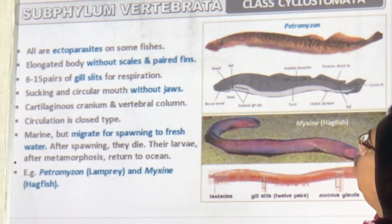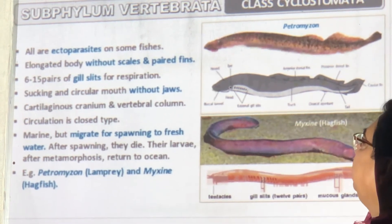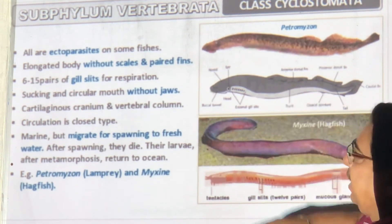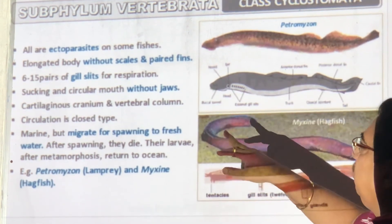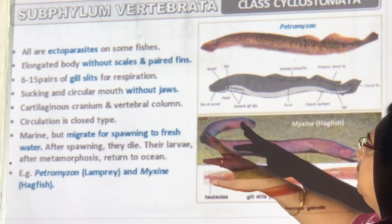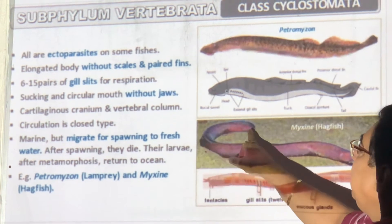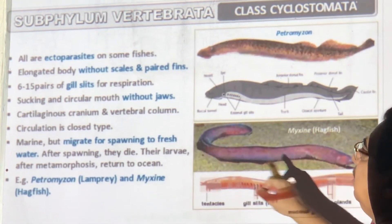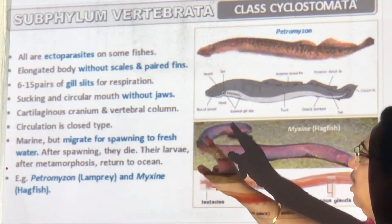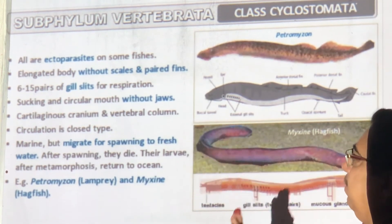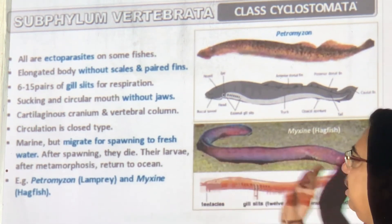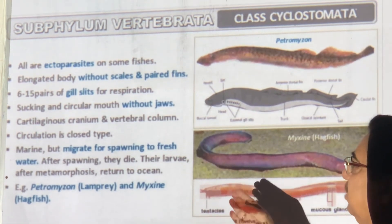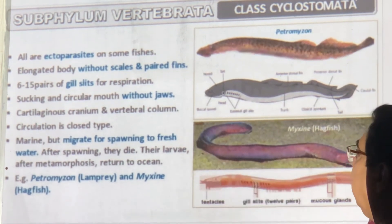Cyclostomata have no scales, no paired fins, and fins are only on one side. They have a sucking circular mouth. The cranium or brain box is made of cartilage. A vertebral column is seen. Circulation is closed. Migration is common. The example is Petromyzon — common name Lamprey, also called hag fish.